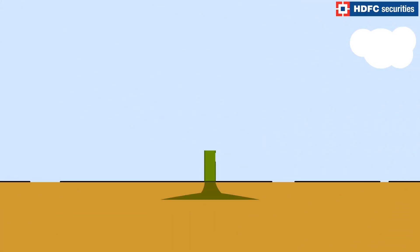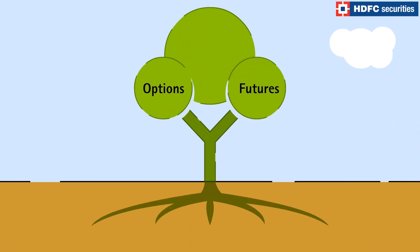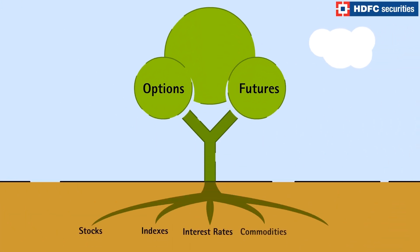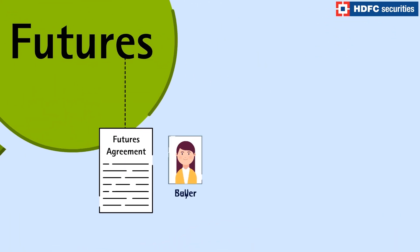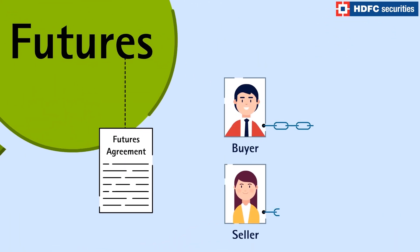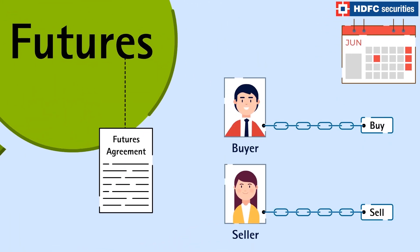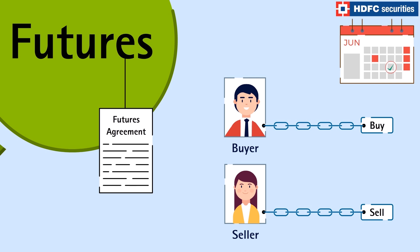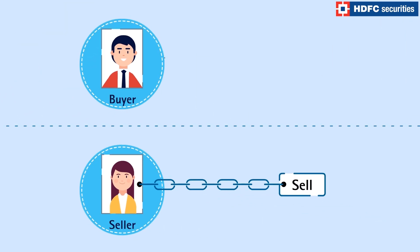Both futures and options are called derivatives because they derive their value from an underlying market. A futures contract creates an obligation to buy or sell physical goods at a future date, and an options contract creates a right but not an obligation to do the same.